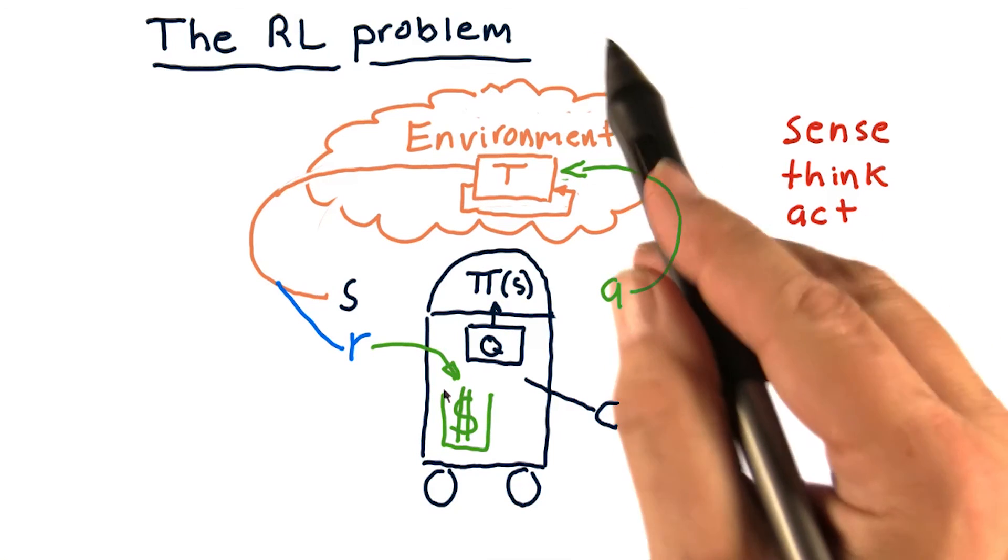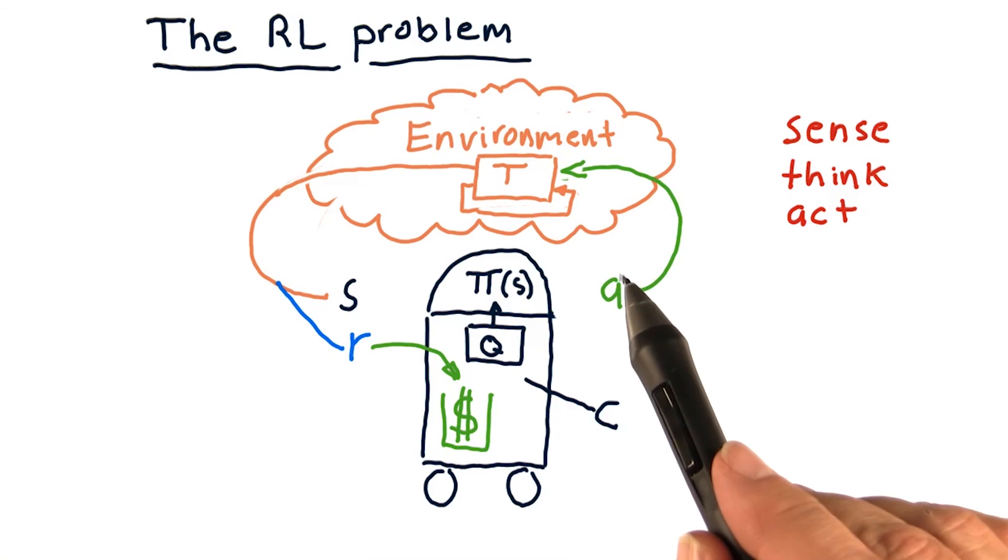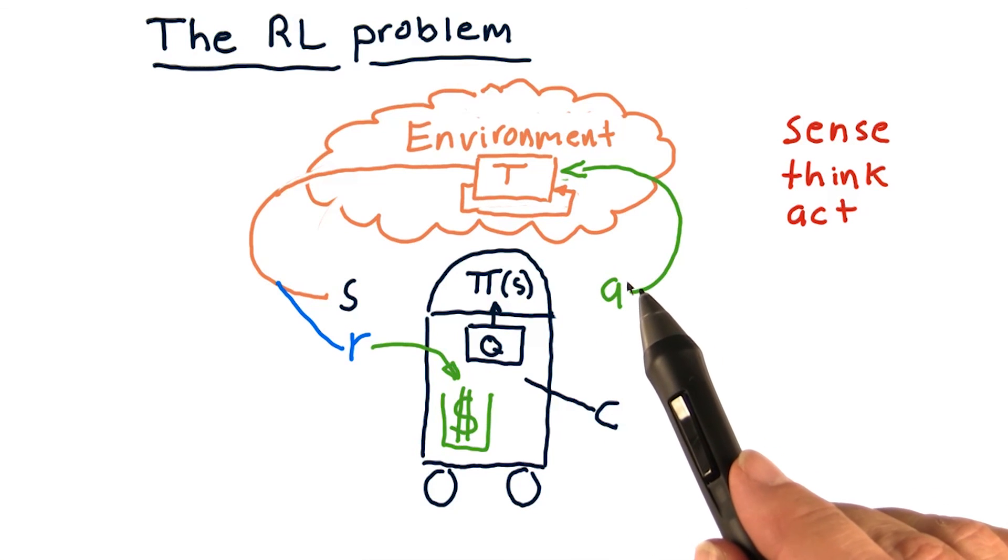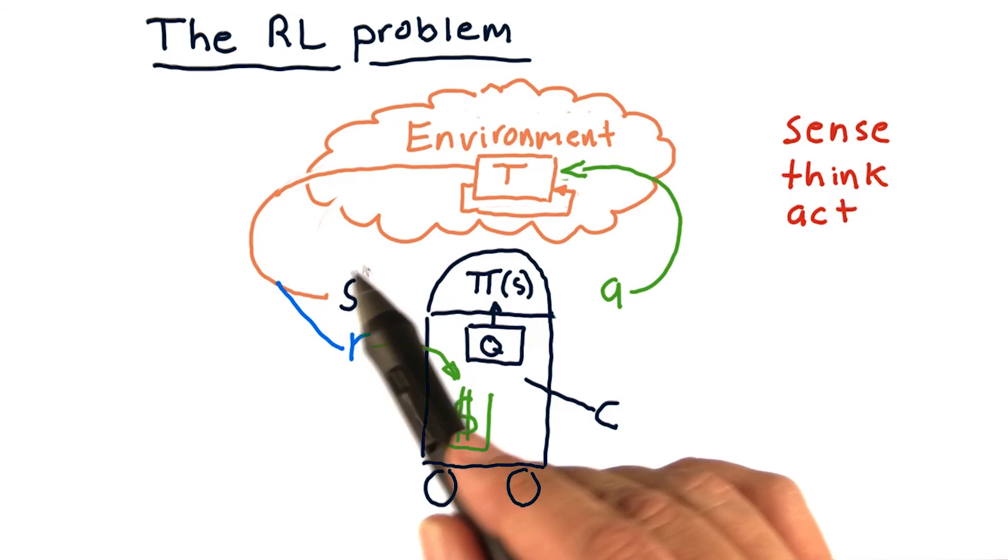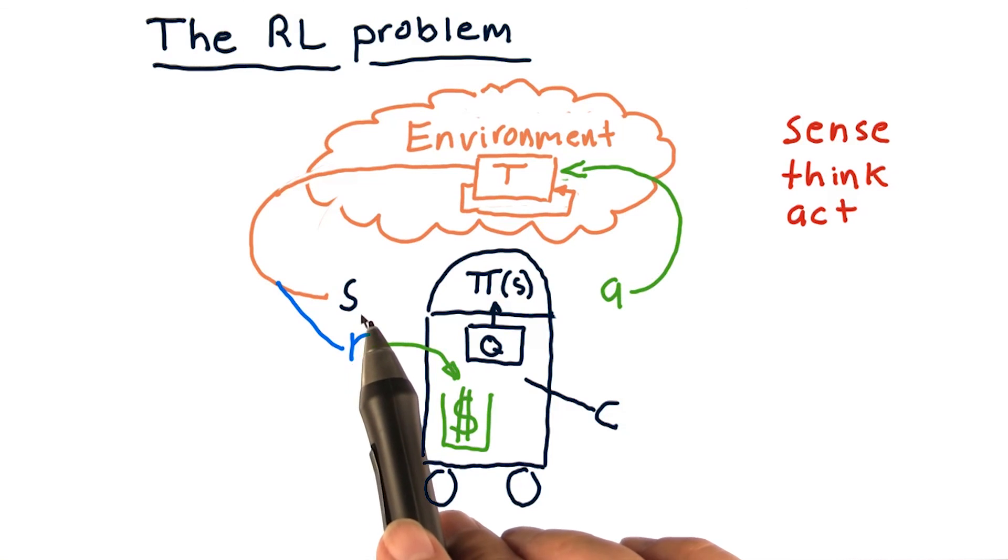In terms of trading, our environment really is the market, and our actions are actions we can take in the market, like buying and selling or holding. S are factors about our stocks that we might observe and know about, and R is the return we get for making the proper trades.